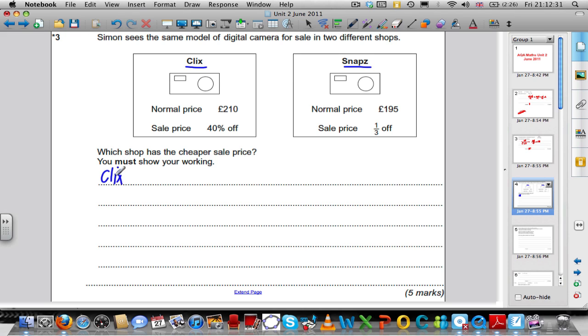Let's work out how much Clicks costs first. I want 40% of 210. So let's start by easily calculating 10% of 210, which is clearly £21. So therefore, 40% of 210 must be 4 lots of 21, which is £84.